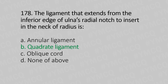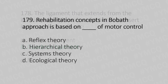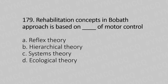Question 179: Rehabilitation concepts in the Bobath approach is based on which theory of motor control? Option A: Reflex theory, Option B: Hierarchical theory, Option C: System theory, Option D: Ecological theory. And the answer is Option B, hierarchical theory.